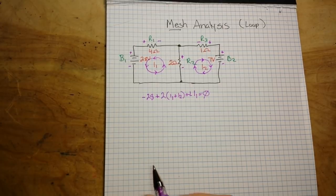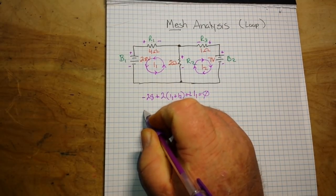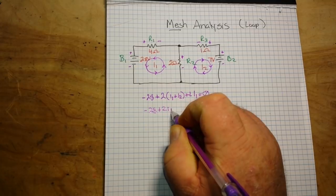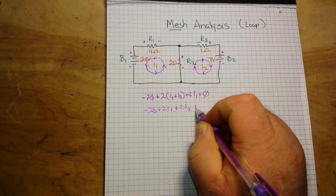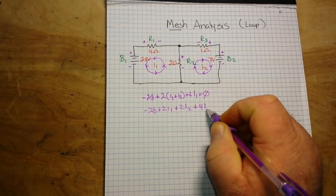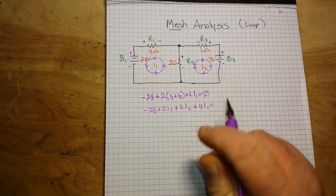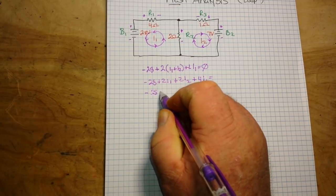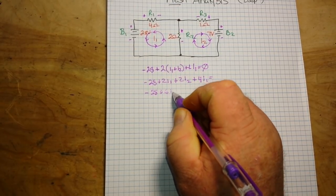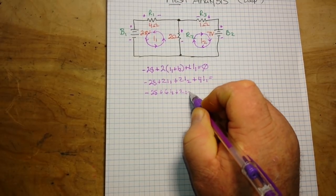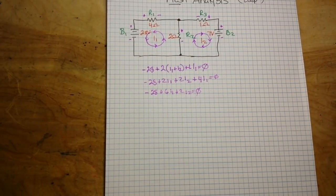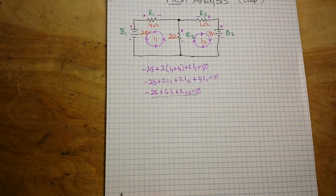We can simplify the equation by distributing our terms in the parentheses. So we say minus 28 plus 2 I1 plus 2 I2 plus 4 I1 equals 0. And then we can combine our like terms and say minus 28 plus 6 I1 plus 2 I2 equals 0. I forgot my 0 up there didn't I? Sorry about that. So we now have our simplified equation for the left-hand loop.